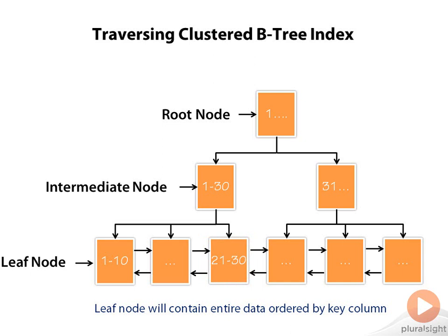If you pay attention, you will notice that no matter what row number it is trying to retrieve, it always has to jump through root node, intermediate node, and leaf node. The number of jumps or hops it has to do always remains the same. Hence, it is called B-tree.